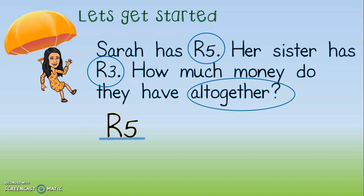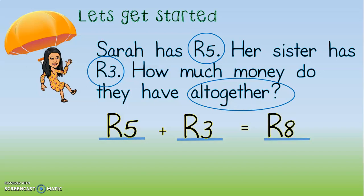The first number is 5 rand. 5 rand plus or minus? Yes — 'altogether' told us that it's a plus sum. Plus 3 rand. And our equal sign. Can you work this out very quickly? What is 5 rand plus 3 rand? Well done. 8 rand.